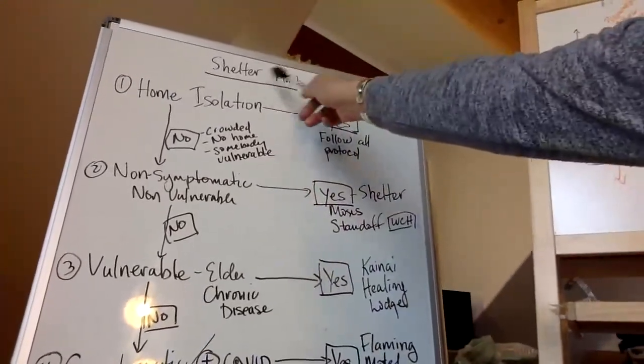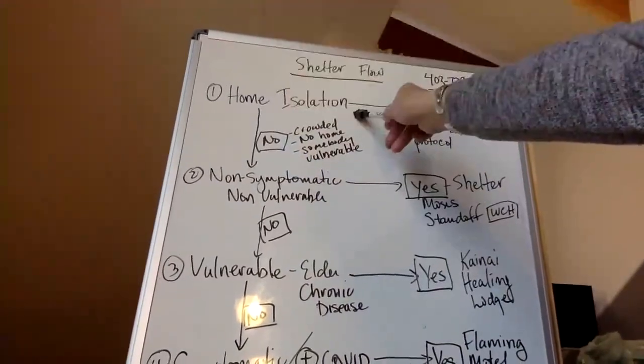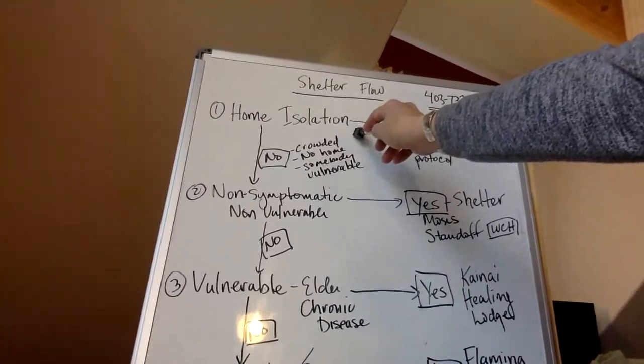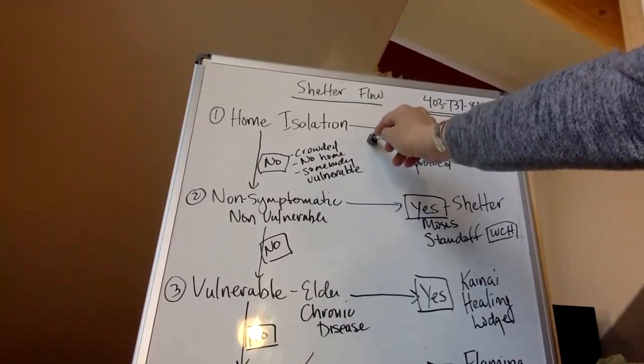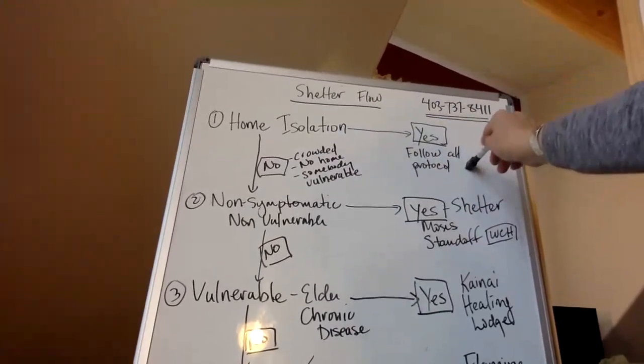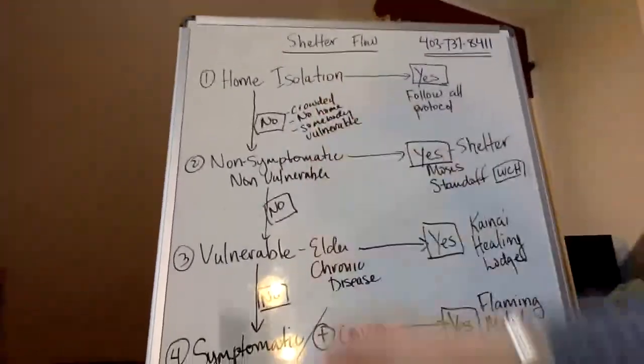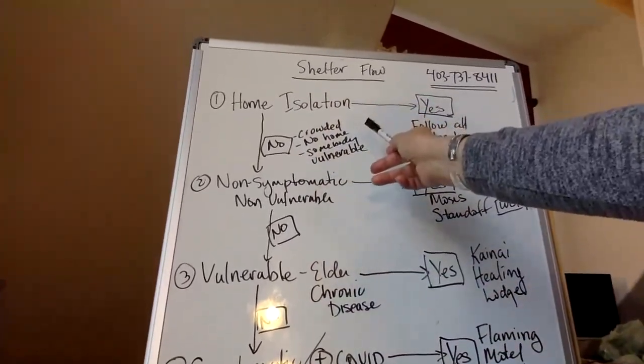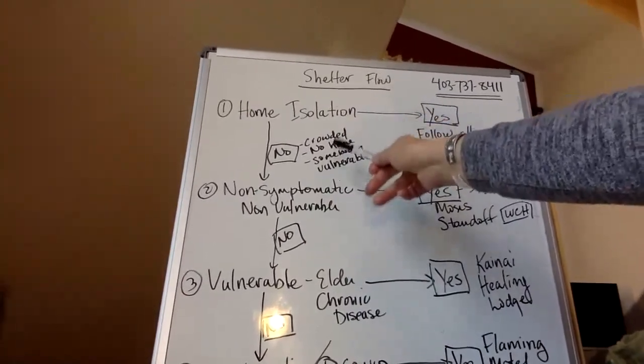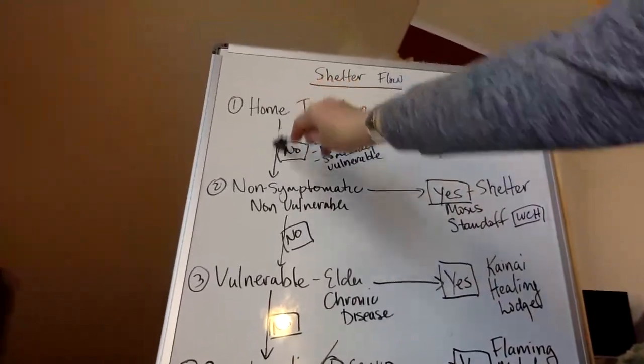Here's the shelter flow. The first thing that we're trying to do is home isolation. So everybody has been asked to stay home and isolate. And if you have the ability, like if you have your own home and you have a fairly safe place to be, then you stay home and you follow the protocol, which most of us have been doing. But we have those individuals who do not have that ability to stay in their home, either it's crowded, either they have no home and they're coming from outside, or somebody who's vulnerable and cannot stay in a crowded housing situation.